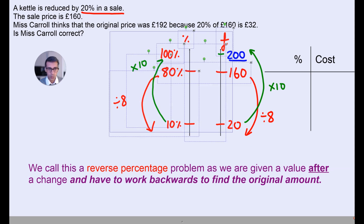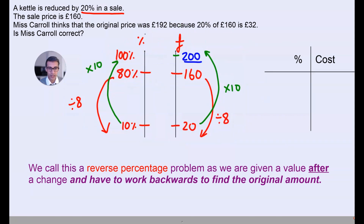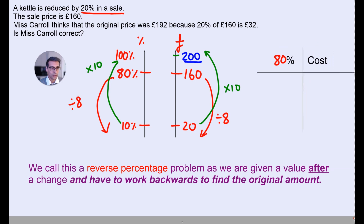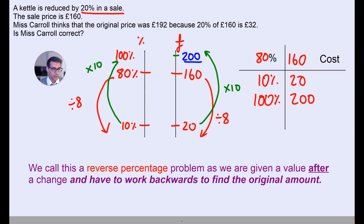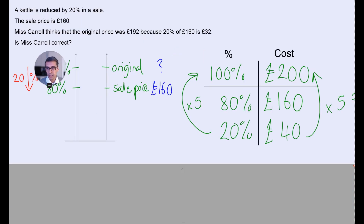I'm going to show you the same question using the table method as well. The way you'd start this off is: you know that 80% is equivalent to £160, and then from there we use the same numbers as before. So 10% is £20, and 100% is £200. So we know that in pounds, we can find out the original amount. You can use either of these methods.